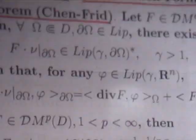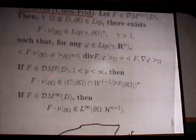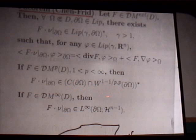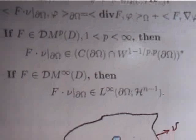The second part of the theorem states: if F belongs to DM^p for p between 1 and ∞, then the trace functional is better — it acts on the space C(∂Ω) intersected with the Sobolev space. If F belongs to DM^∞, then this functional is actually an L^∞ function on the boundary. Here μ is the unit outward normal, and one can write down the integration by parts formula explicitly.